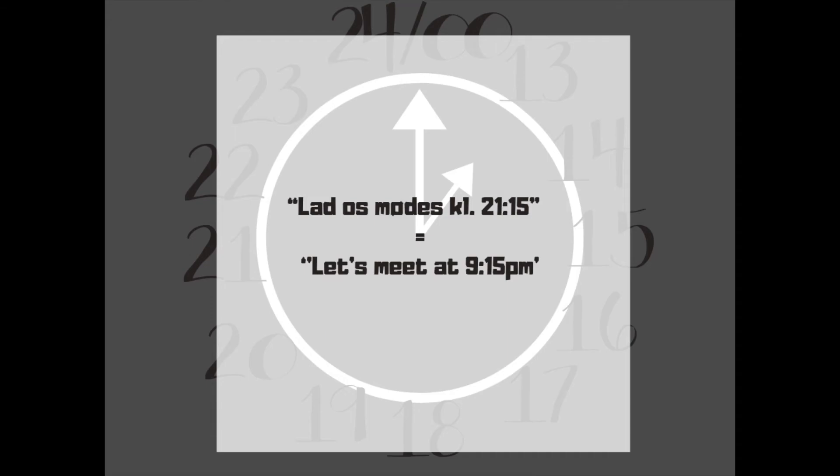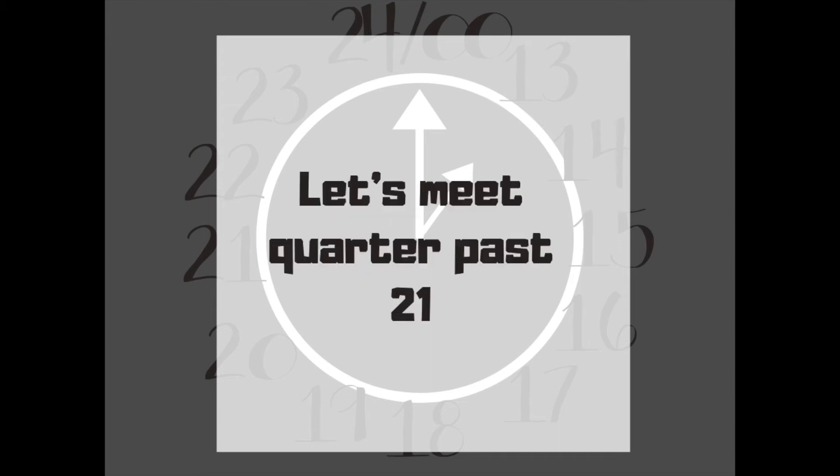For example, kl. 21:15 means let's meet at 9:15 p.m. If you want to use quarter past, quarter to, or half past, it gets a little bit tricky.